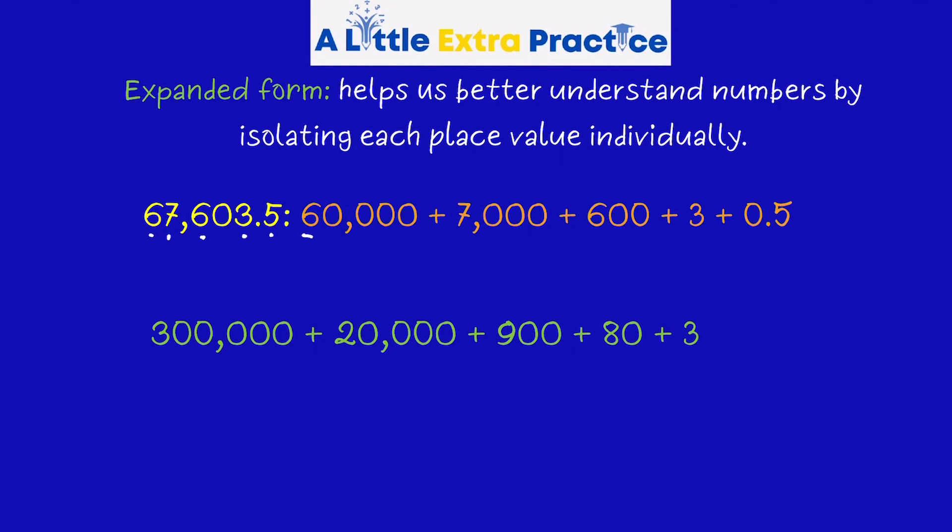Before, we've always given you the number in standard form. This time, the number is in expanded form, and to be able to solve a problem like this, which is the opposite, the first thing I do is I look at how many digits the largest number has. In this case, 300,000 has 6 digits.